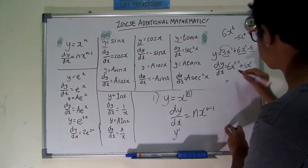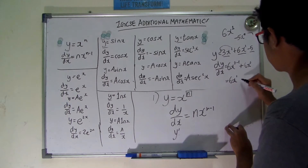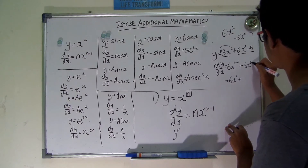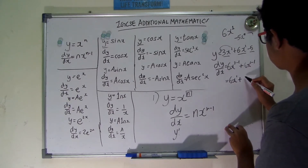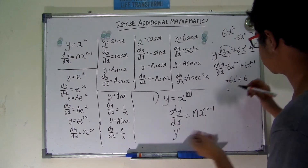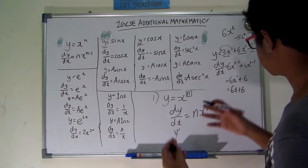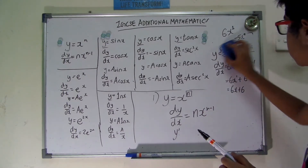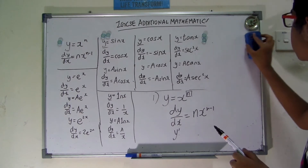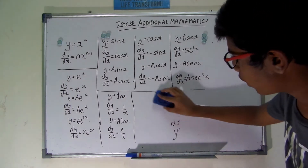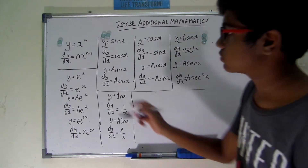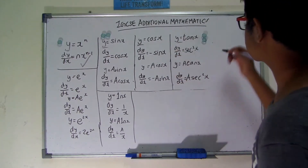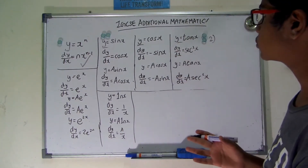Simplifying, dy/dx equals 6x plus 6. That is how a function is transformed into its differentiated version. Any standalone number without an algebraic coefficient differentiates to zero and can be neglected entirely.